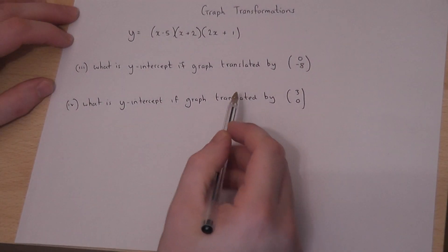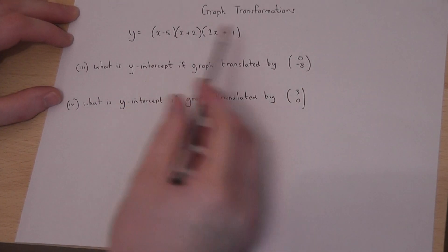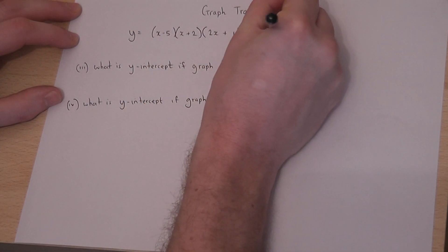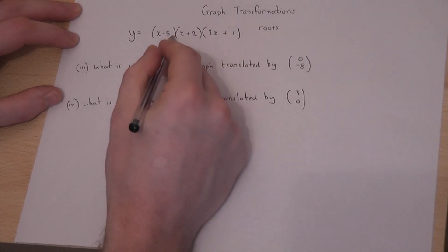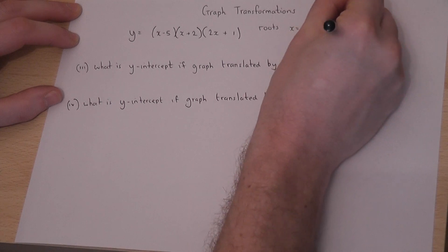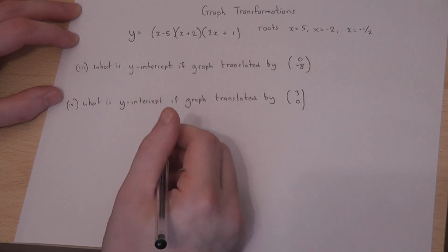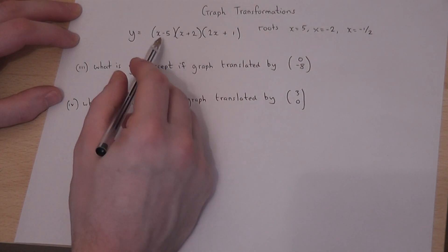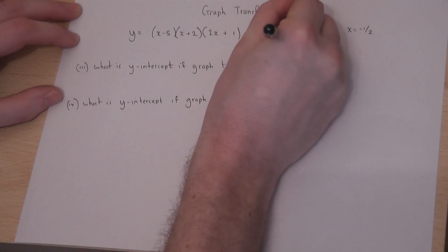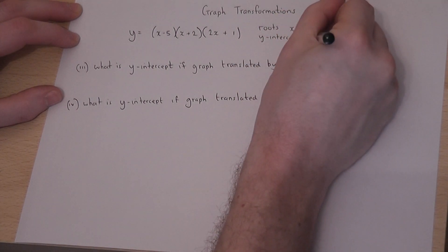This video considers two transformations, in this case translations of a given function. We know that this function has roots at x=5, x=-2, and also x=-1/2. We also know that it cuts the y-axis when x=0 at -5 times 2 times 1, so the y-intercept is -10.